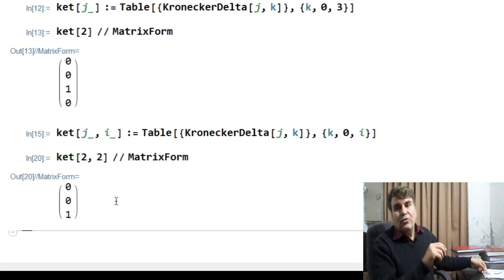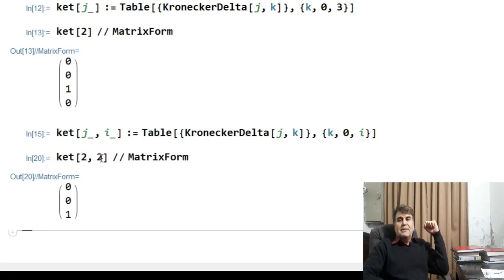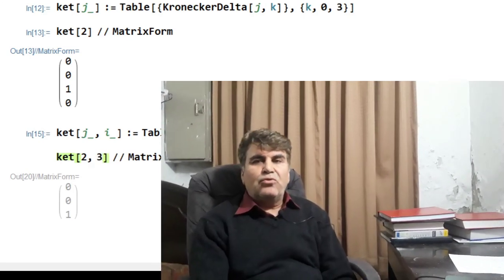So, this way you can write the basis vectors of the Hilbert space for a system. Can we use this form of the ket to construct a superposition state for a given system of a given dimensions? Yes, that we can do. But for that purpose, we have to invoke the SUM command. And let's see how it works.